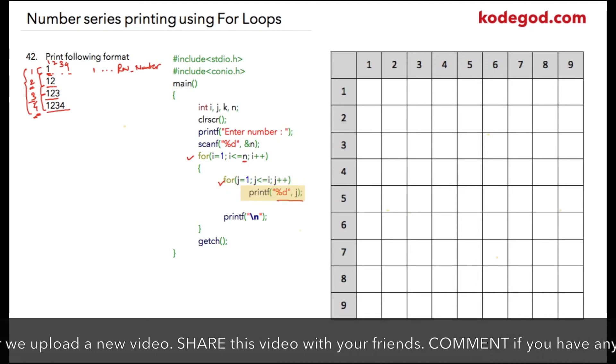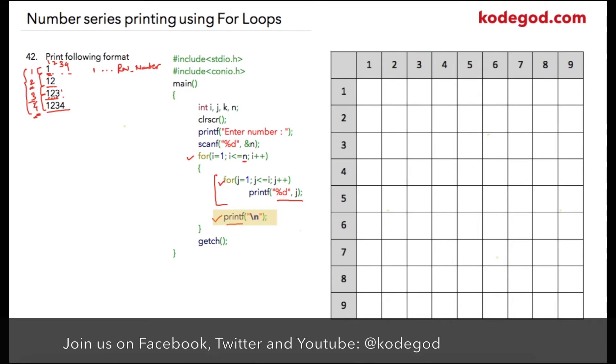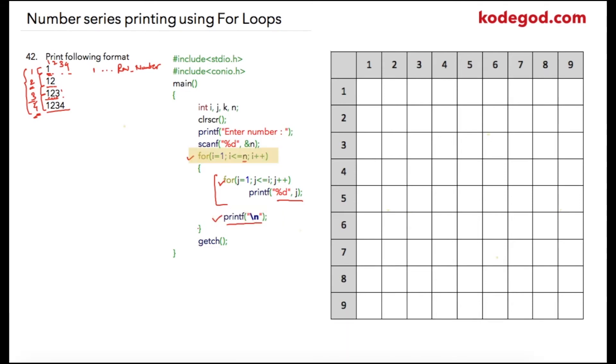As soon as value of j equals i, then this loop will be terminated and the controller will go on to next line because of this printf slash n statement. Once the row is printed, value of i will be incremented and then the iteration will be continued for the next row.